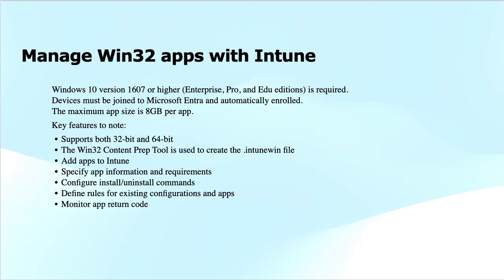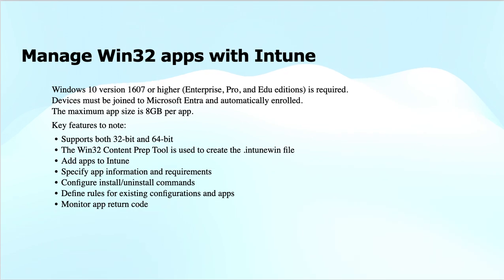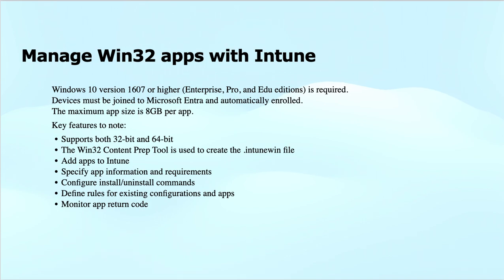To manage Win32 applications within Intune, Windows 10 version 1607 or later is required, and must be Enterprise, Pro, or Education edition. Devices must be joined to Entra and auto-enrolled. Maximum supported app size is 8GB. Both 32-bit and 64-bit applications are supported. The Win32 content prep tool is used to create the .intunewin file to add the application to Intune, with details like app info, requirements, install and uninstall commands, detection rules, and app return codes.